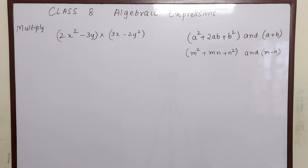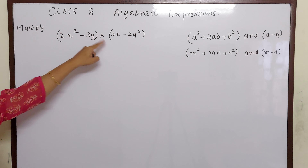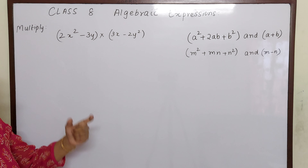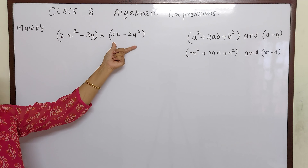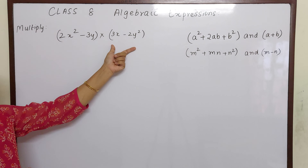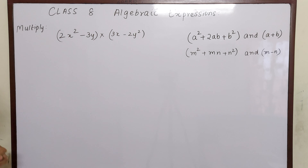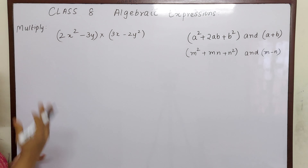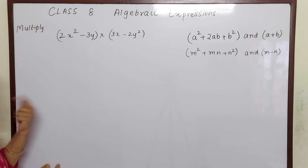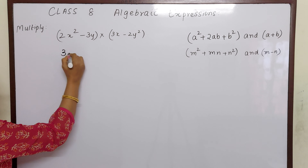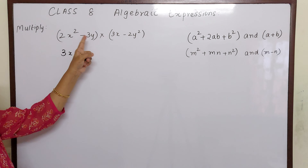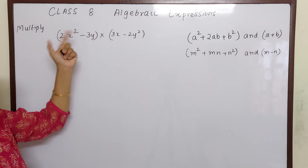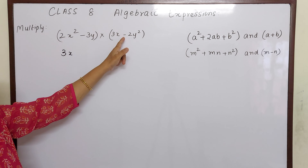If you see children, this is a binomial with a binomial. As we studied in last class, we have to write any one algebraic expression twice and then use the distributive property. Here if you see, both are carrying a minus sign. Usually, if one is having minus and one is having plus, we write the minus one two times and then distribute.